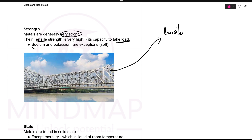Now there is an exception. Alkali metals like sodium and potassium — just now we learned they are soft. So they are not strong and they don't have tensile strength. The exceptions are everywhere.